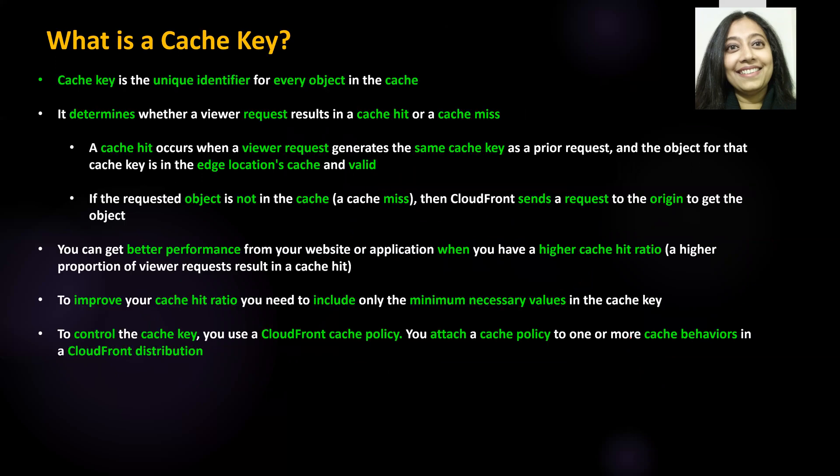Let us begin this tutorial with what is a cache key. A cache key is a unique identifier for every object in the cache. Consider a database table with a primary key — every record can be identified by that primary key because it is a unique identifier. Similarly, a cache key is a unique identifier for every object in the cache, and if you want to retrieve an object, you need the cache key.